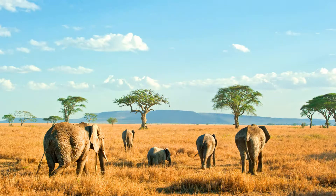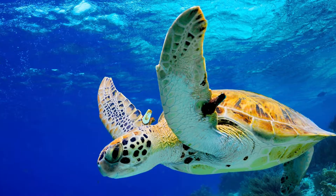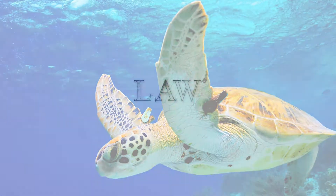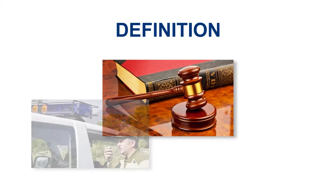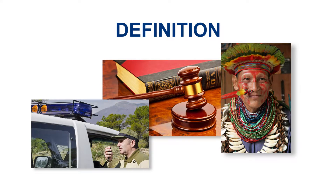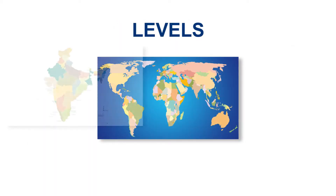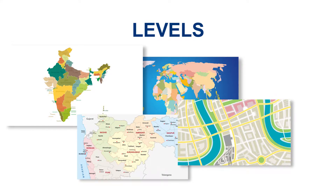What is law, and why does it matter to protected areas? Law is essential to creating and maintaining successful protected areas. Law describes a body of rules governing human conduct, recognized as binding, and enforced by a public authority. Law exists at many levels, including international, national, provincial or state, and local or community levels.